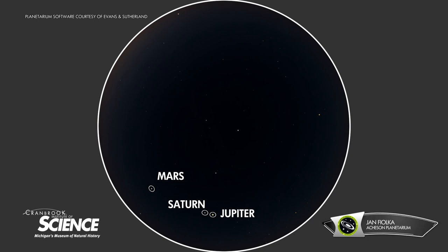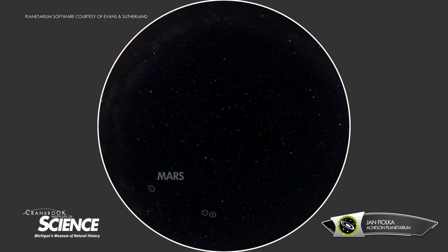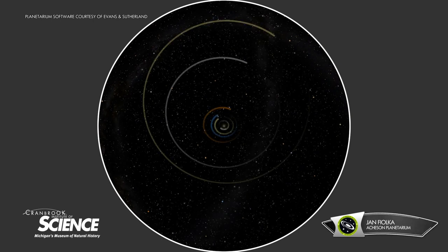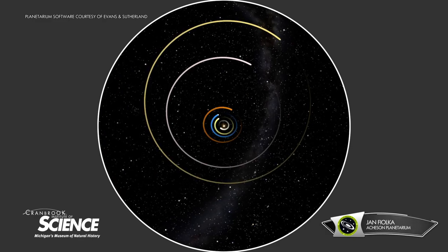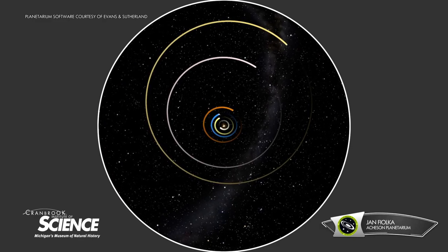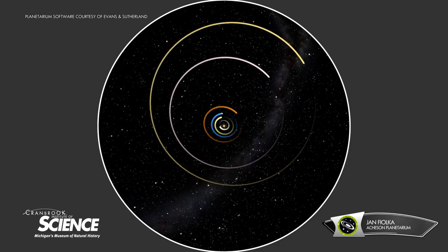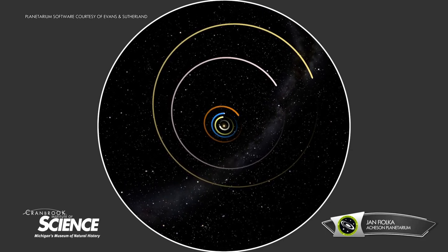So why do these planets wander and change their positions? Well, it's because they, and also ourselves, are orbiting around the sun. So we see them in different positions in our sky as a result. Amazing that we can witness other planets orbiting the sun with just our eyes.